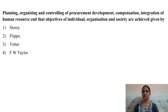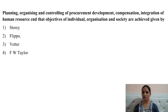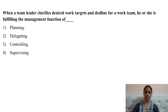Next question: planning, organizing and controlling of procurement, development, compensation, integration of human resources, and ensuring that the objectives of individual, organization and society are achieved — this definition was given by Flipo. Flipo would be the right answer for this question.